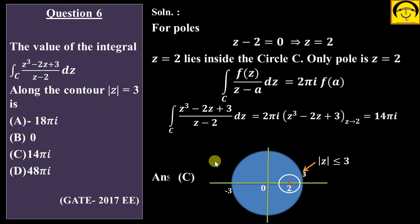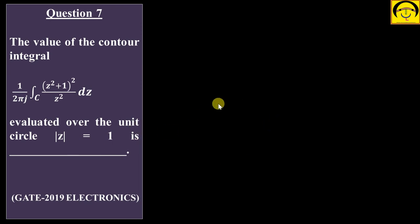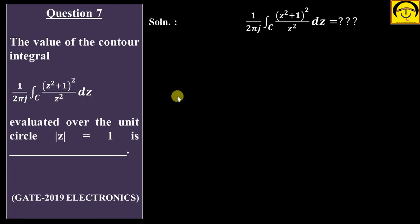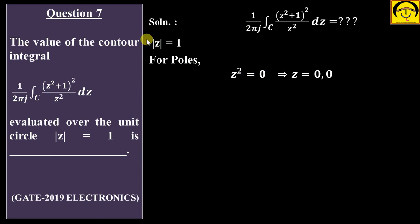I think the concept of how to use the Cauchy integral formula is now clear. Let's move on to Question 7: find the value of the contour integral (1/2πj) ∫ (z²+1)² / z² dz evaluated over the unit circle. The circle given has radius 1 centered at 0, the unit circle. The denominator is z², so the pole is z² = 0, meaning z = 0 with multiplicity 2. And z = 0 lies inside the unit circle.